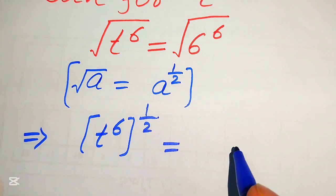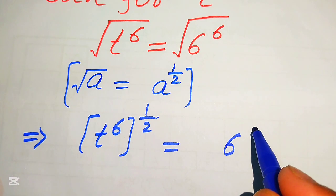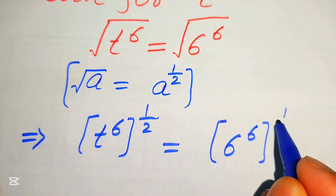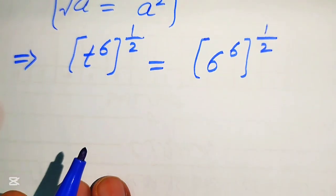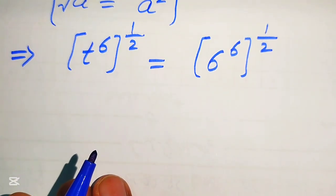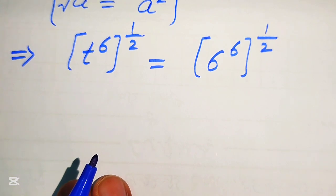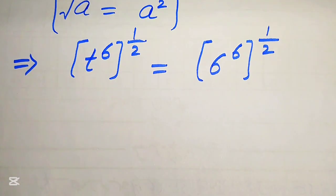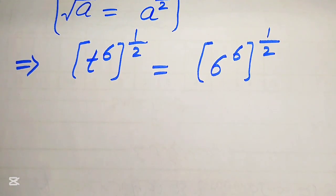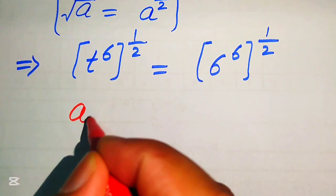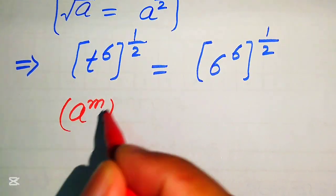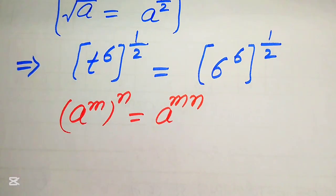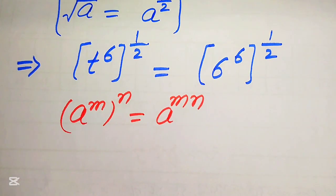Similarly, in the second case we have 6 to the power of 6 and we write its exponent as 1 over 2. Now we apply the exponent law: if we have a to the power of m to the power of n, these exponents are multiplied by each other and we write it as a to the power of m multiplied by n.